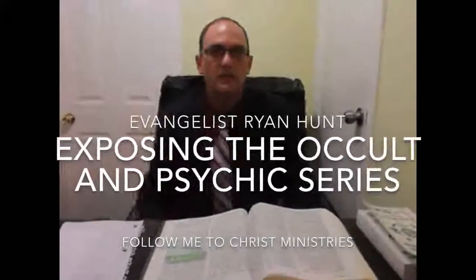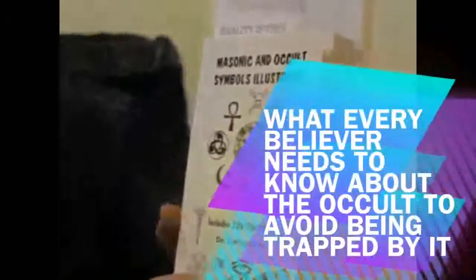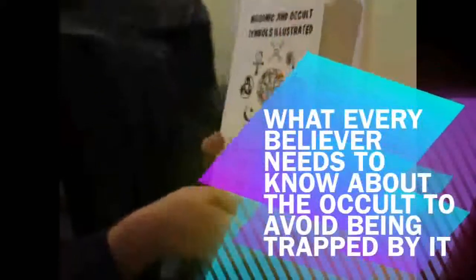Hello everybody, my name is Ryan Hunt and I'm just going to tell you a lot of my experiences in the psychic world and occult practices, what I used to do and what the Word of God says. I'm going to use everything from the Bible here as my ultimate source of truth and final authority, and it should be yours as well. I'm also going to be using the Masonic Occult Symbols Illustrated from Dr. Kathy Burns.